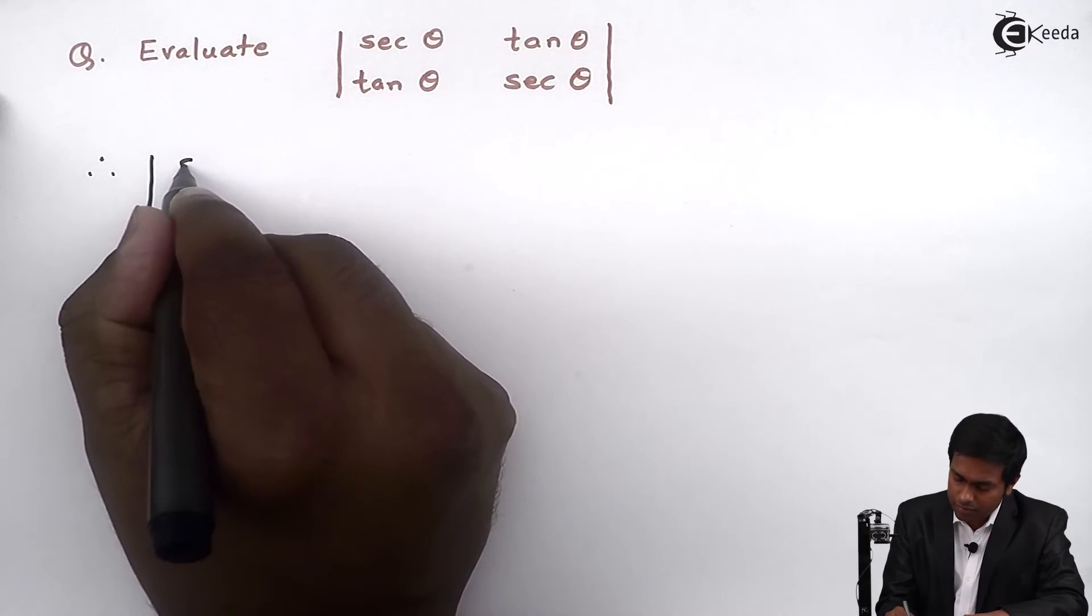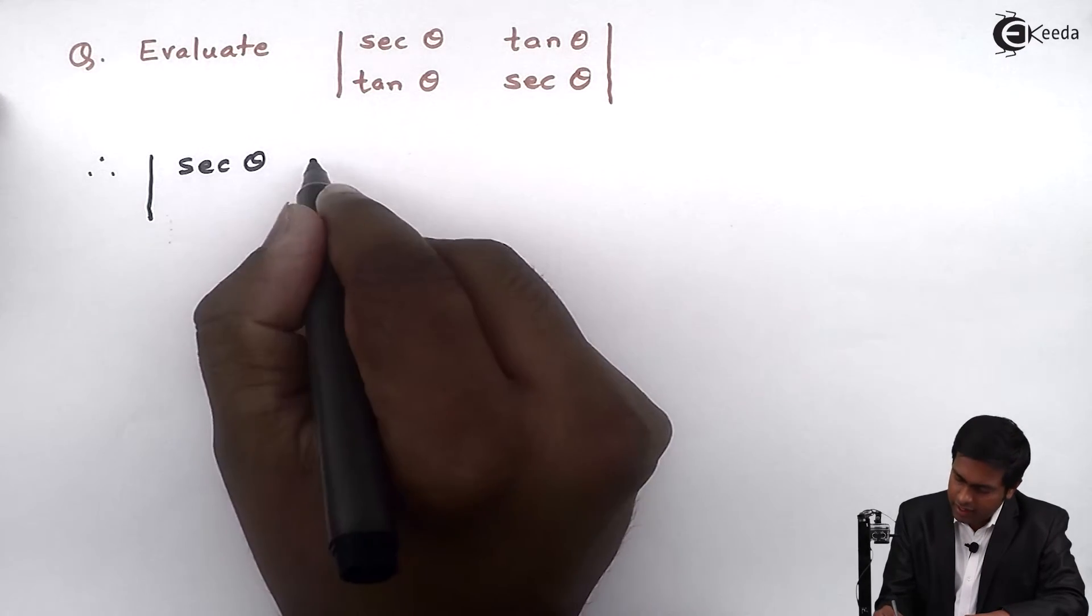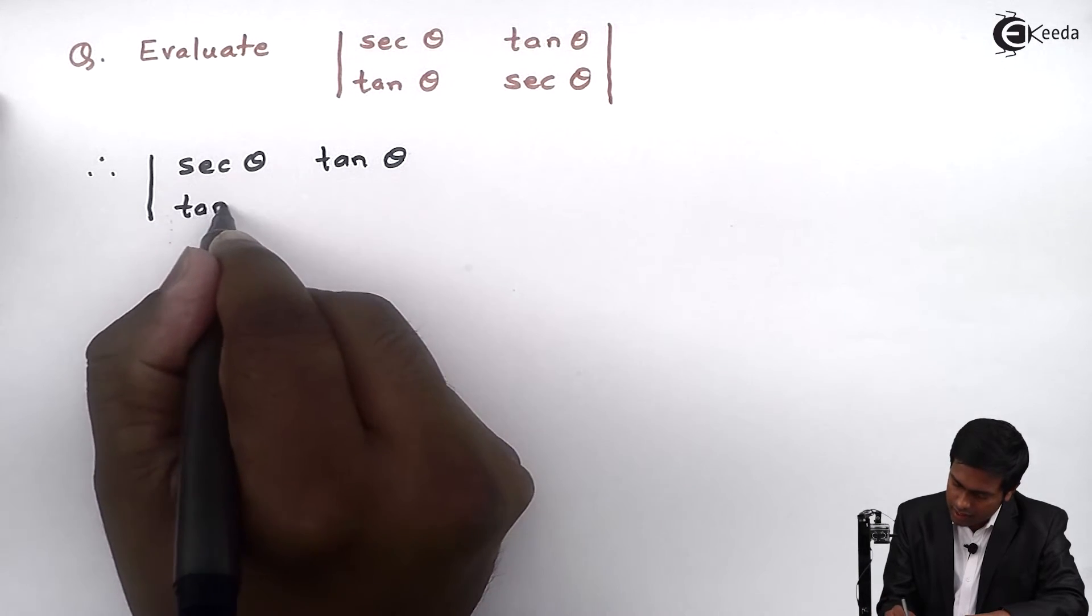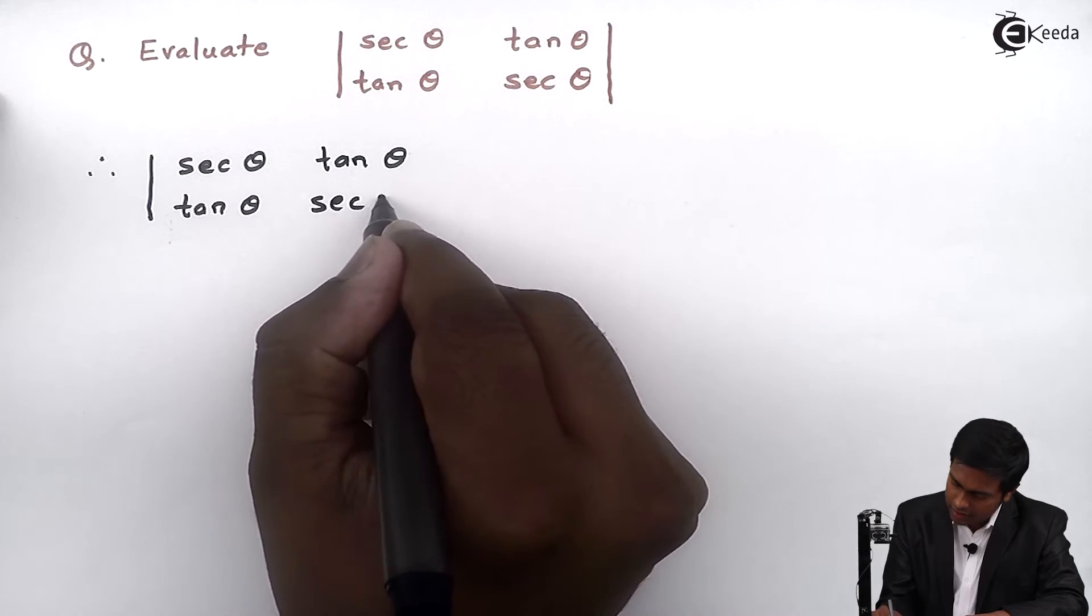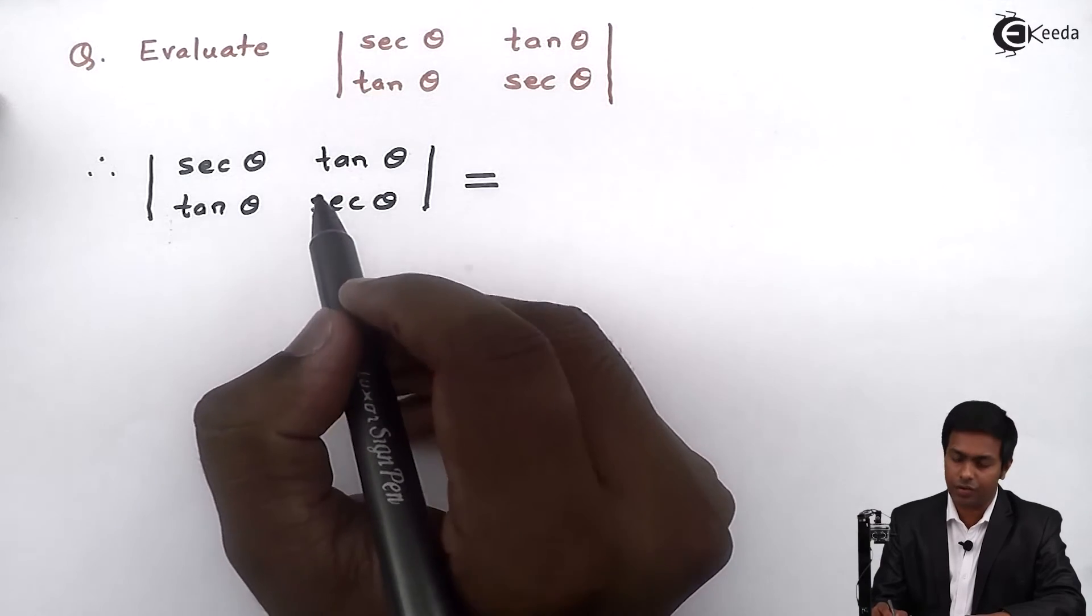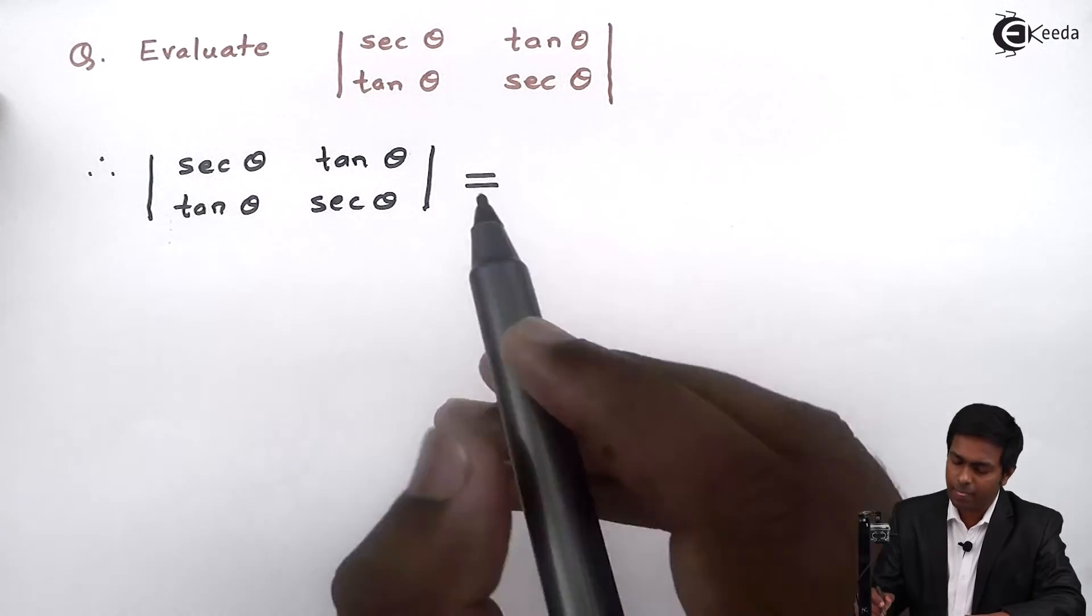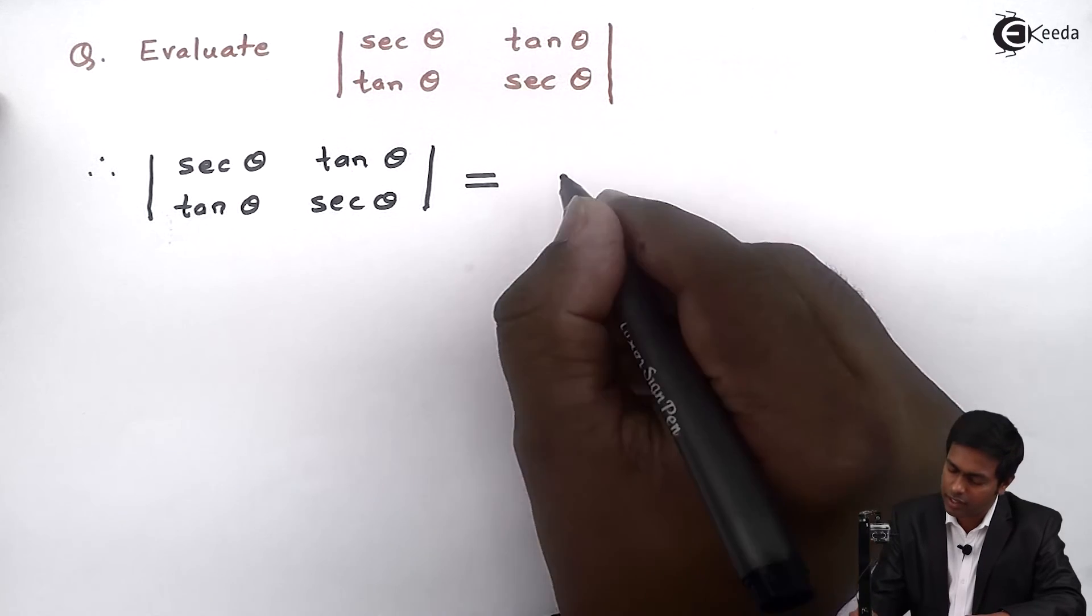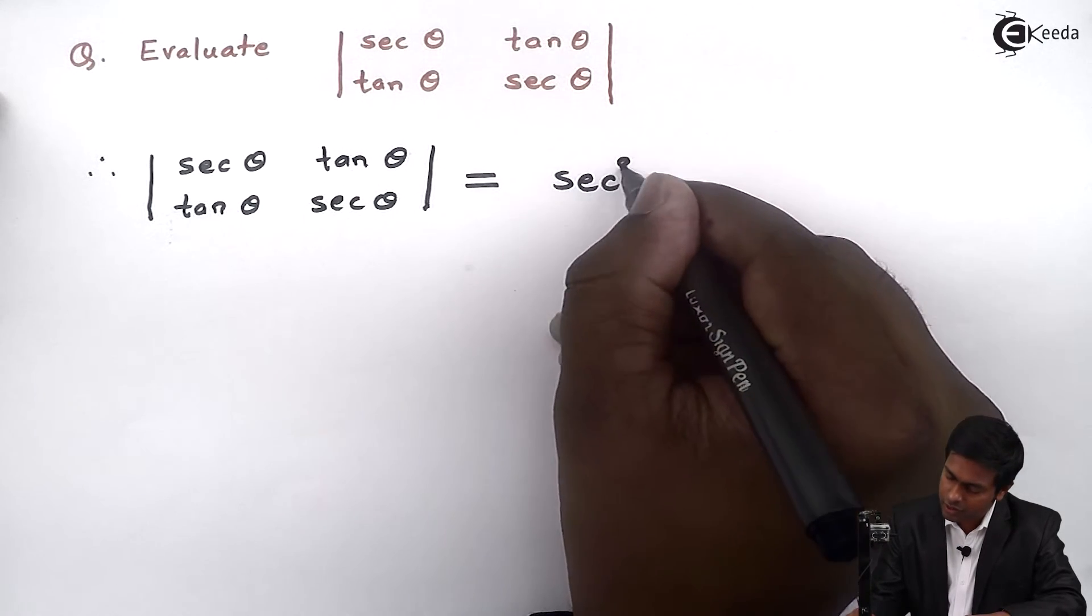determinant of sec theta, tan theta, tan theta, sec theta is equal to, now I will multiply the elements which are on the principal diagonal. So sec theta into sec theta, so by performing this multiplication we will get sec square theta.